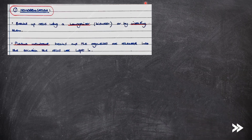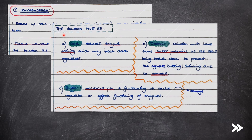Finally, we need to look at cell fractionation, which is the process by which cells are broken up and their organelles separated out. The first step is homogenisation, which breaks up cells using a homogeniser or by vibrating them. The plasma membrane breaks and organelles are released into the solution. This solution must be: firstly cold, to reduce enzyme activity which may hydrolyse organelles; secondly isotonic, so it has the same water potential as the cells to prevent organelles bursting or shrinking; and finally buffered to maintain pH, since a fluctuating pH could damage organelles or affect enzyme function.